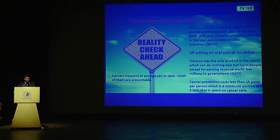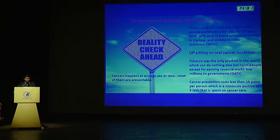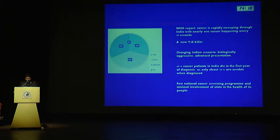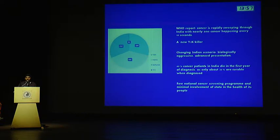Uttar Pradesh, the most populated state in India, is sitting on a cancer epidemic. Tobacco is the only product in the world which can do nothing but harm people. Cancer prevention costs less than 15 rupees per person, a minuscule portion of at least 5 lakh spent on cancer care. A glance at premium cancer institutes: King George's Medical University with 300 OPD patients per day, Tata Memorial Hospital around 200, Sanjay Gandhi Postgraduate Institute of Medical Sciences Lucknow about 150, and Regional Cancer Centre Trivandrum about 80 patients. WHO reports that cancer is streaking through India with nearly one cancer happening every 50 seconds.